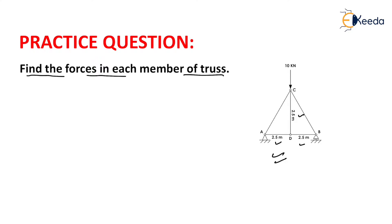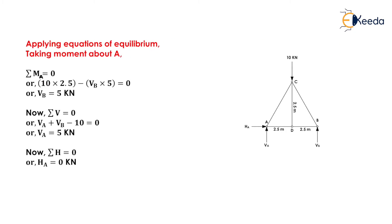We need to find the forces in each member of the truss. For the calculation of forces in each member, first of all we need to find the support reactions VA, HA, and VB. For the determination of support reactions, we apply the equations of equilibrium and take moment about A, because this is a hinge support. Taking moment about A equals zero.